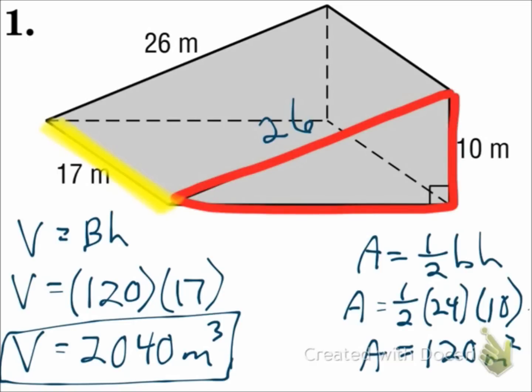So the base was a triangle, had to find a side of the triangle. So use the Pythagorean theorem, and then substitute it all in.